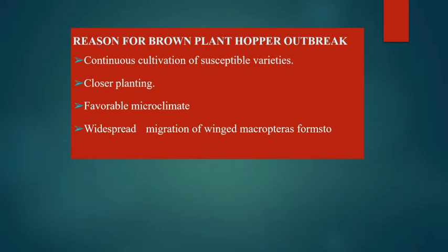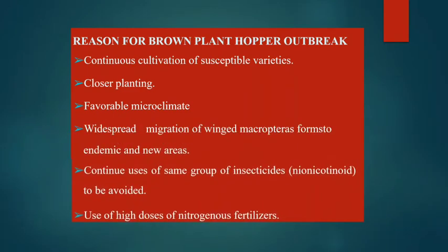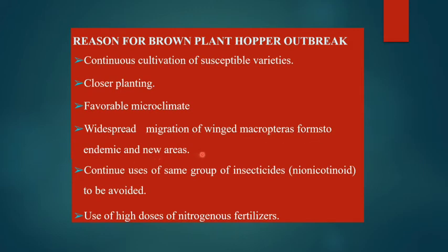Reasons why brown plant hopper outbreaks occur: continuous cultivation of susceptible varieties, closer planting and dense seeding, favorable microclimate, widespread wind-aided migration of BPH into endemic and new areas, continuous use of the same group of insecticides, and use of high doses of nitrogenous fertilizers — which is a main reason for brown plant hopper outbreaks.